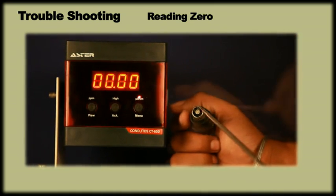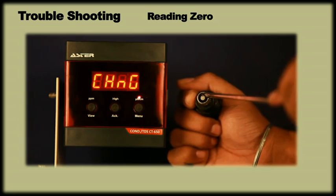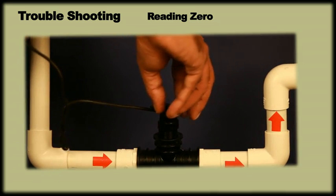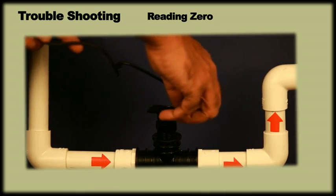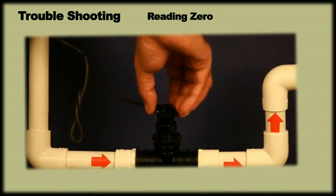If conductivity remains zero, remove the sensor from line and short the electrodes. On shorting the electrodes, the display should show over range. If it shows over range, reinstall the sensor ensuring the electrodes are in proper contact with water. If it does not show over range, then the sensor cable might be open. Contact service center.